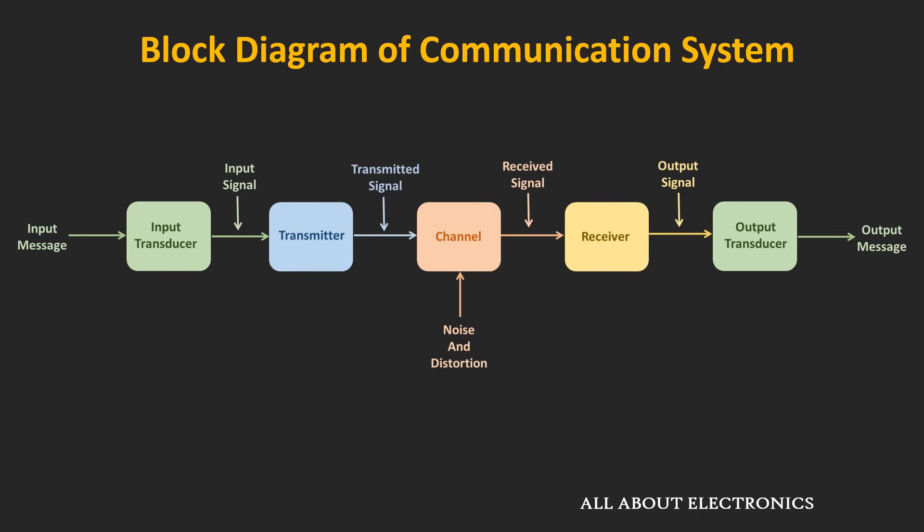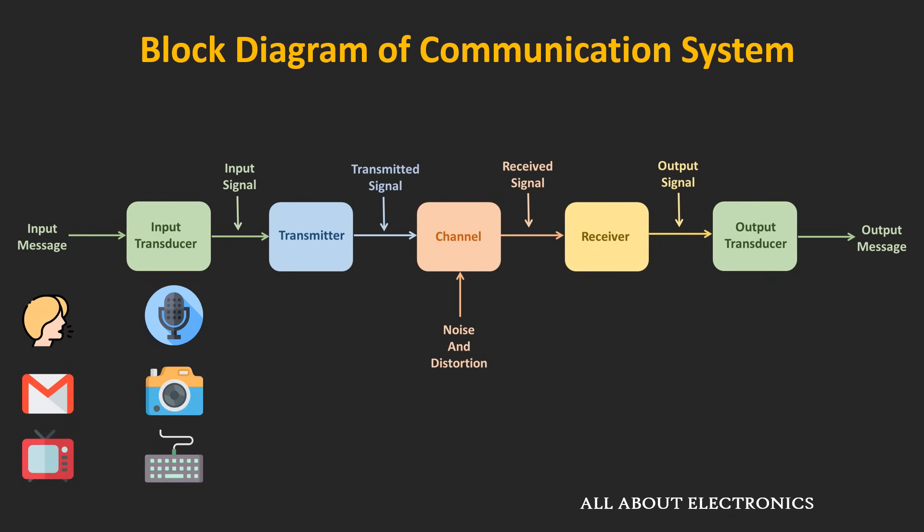In this block diagram, the first block is the source itself, from where the message signal is generated. This message could be voice, email, a television signal, or even a data signal. If the message is in non-electric form, then using a transducer it is converted into an electrical signal. The microphone, CCD camera, and computer keyboard are examples of transducers.